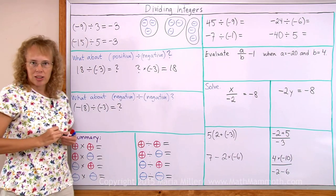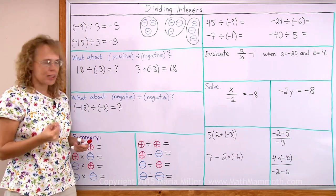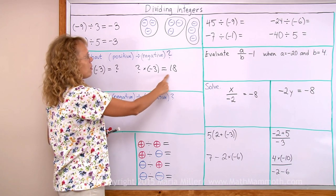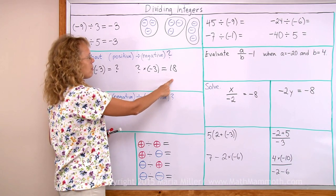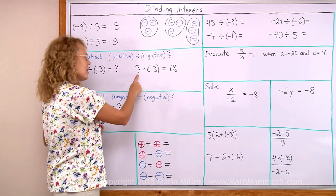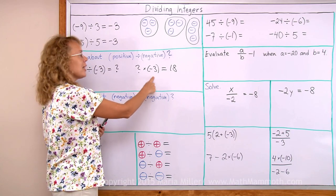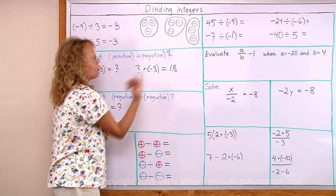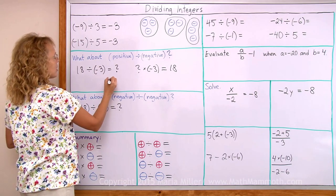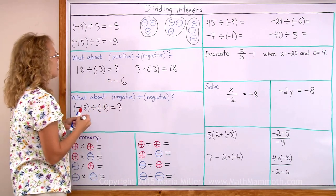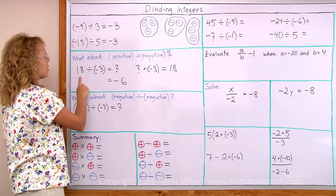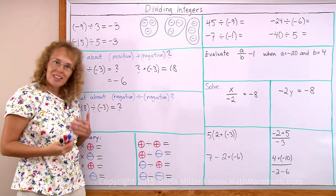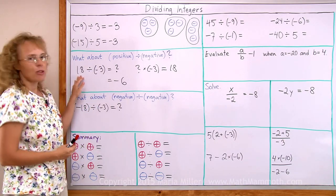I'll check whether 6 or negative 6 works here. 6 times negative 3 would be negative 18, so 6 does not work. Negative 6 times negative 3? Yes — because when you have two negatives and you multiply, you get a positive number. So negative 6 is the answer. A positive divided by a negative gave a negative, and that would happen every time no matter what numbers you use.